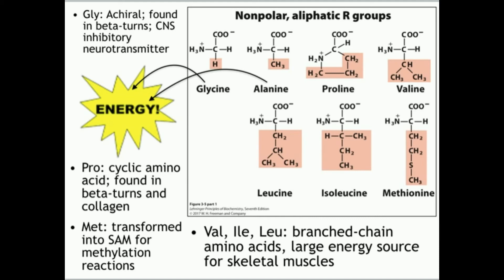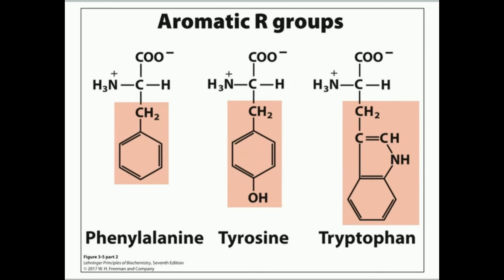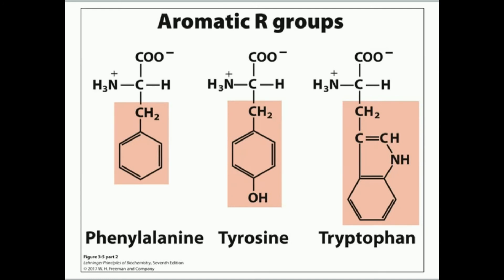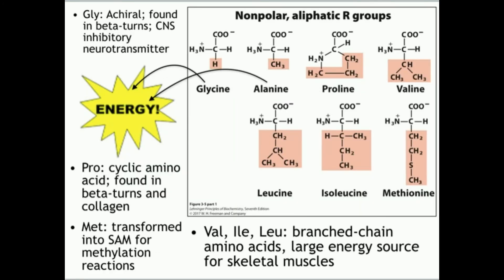Proline is the only cyclic amino acid. What that means is that the nitrogen of the alpha amine, through its carbon chain, connects back to the alpha carbon — we don't find that in any of the other amino acids, where the alpha amine is a free amine not connected back to the alpha carbon. So proline is the only cyclic amino acid in that sense.